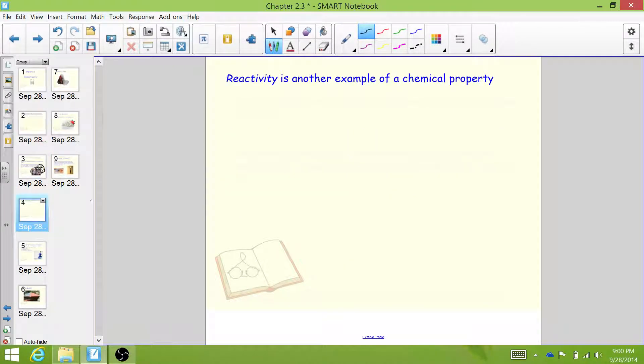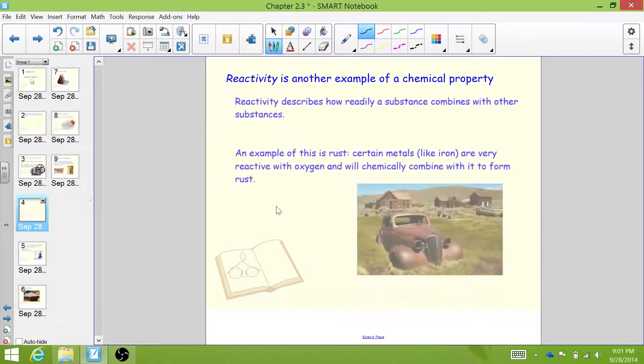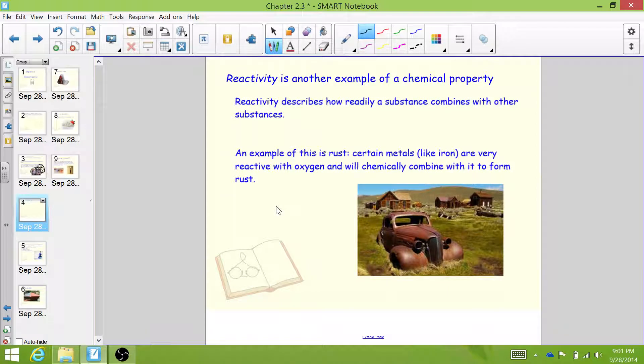Another example of a chemical property is reactivity. Reactivity is pretty general, but it describes how readily a substance combines with other substances. A good example of this is rust. Certain metals, like iron, are very reactive with oxygen and will chemically combine with it to form rust.